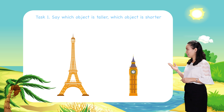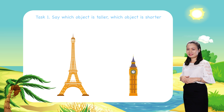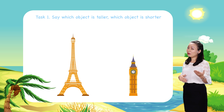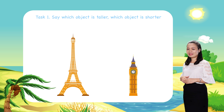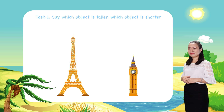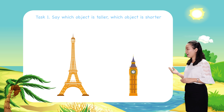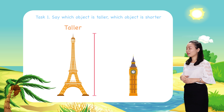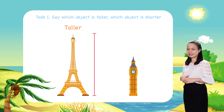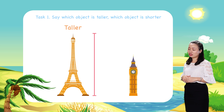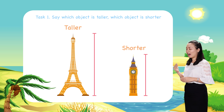Look, this is Big Ben. This is the Eiffel Tower. Which one is taller? Which one is shorter? Alright, so the Eiffel Tower is taller than Big Ben, or Big Ben is shorter than the Eiffel Tower.